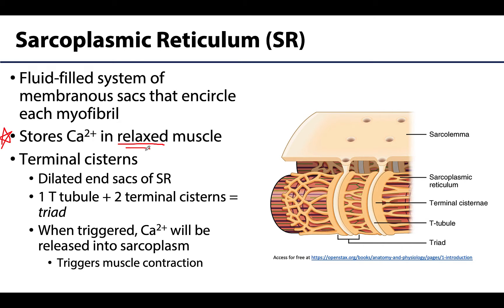At the ends of the sarcoplasmic reticulum there are dilations called terminal cisterns, or cisternae (plural). These butt up against the T-tubules of the sarcolemma. When you combine two cisterns and a T-tubule together, that arrangement is referred to as a triad. When an action potential travels down the T-tubule, it triggers the release of calcium from those terminal cisterns into the sarcoplasm — and it is that calcium release that is vital in allowing muscle contraction to occur.